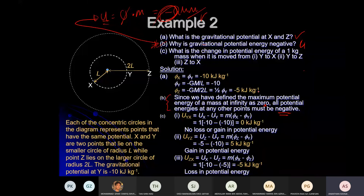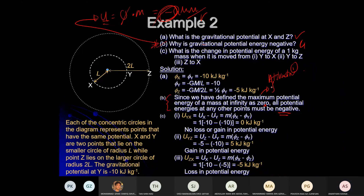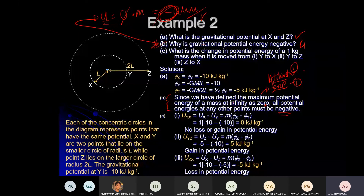Additionally, in the Cambridge mark scheme, they add another point: one mark is given for saying the potential is caused by an attractive force. Please include this. The potential gained by the object is due to an attractive force — that's one mark. Then discuss: since maximum potential at infinity is zero, all nearby potential is negative.